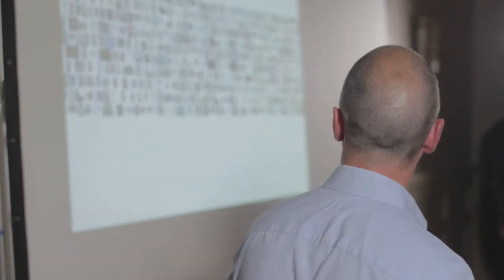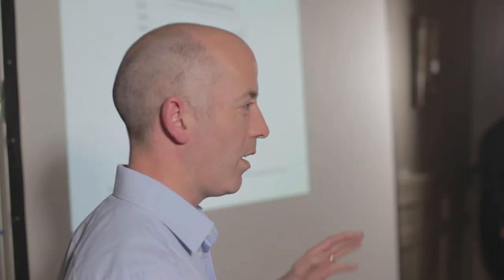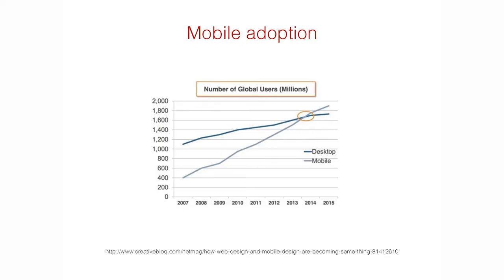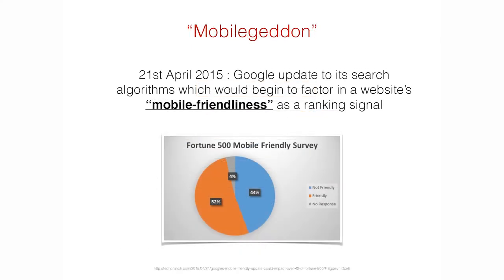We now have a staggering number of devices, and it only grows. Because the theme was mobile, I should mention the fundamental tipping point from last year: according to comScore stats, we now have more people on mobile than desktop. And as somebody else already mentioned, Mobilegeddon arrived.